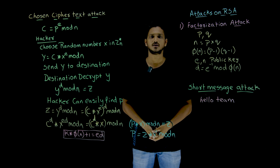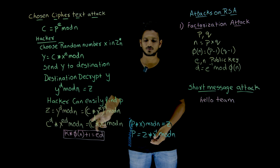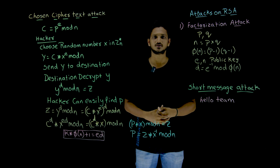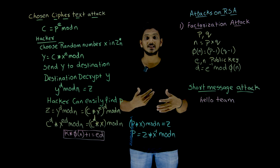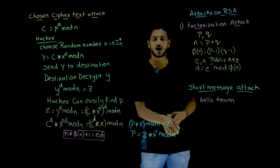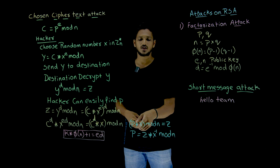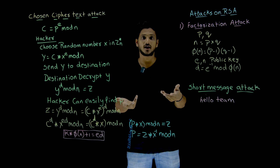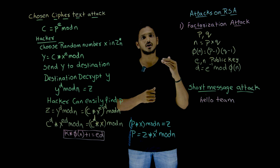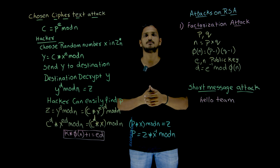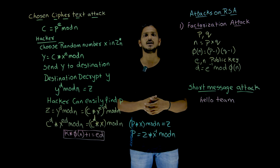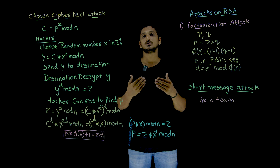Since C power D equals the plain text P, we get Z equal to P multiplied by X mod N. From this, the hacker can easily identify P: P is equal to Z multiplied by X inverse mod N. He can easily find X inverse because X was generated by the hacker himself, and he can use the Euclidean algorithm to compute X inverse in polynomial time.